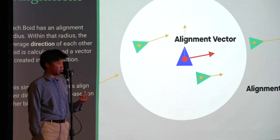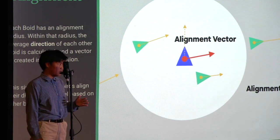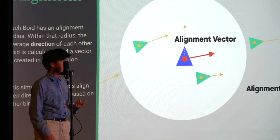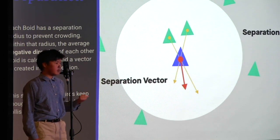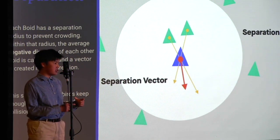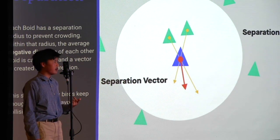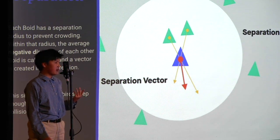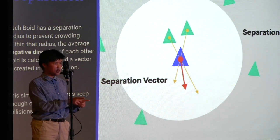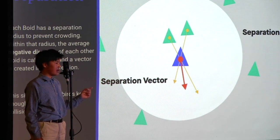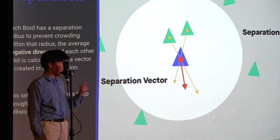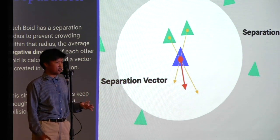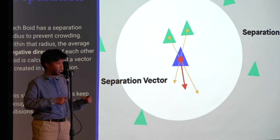Cohesion and alignment are basically the backbone of the simulation, but we need one more rule to prevent these birds from colliding with each other. The last rule is separation. Separation is just to make sure the boids don't merge with each other while they're moving. It's a smaller radius compared to alignment and cohesion. Within that radius, the boids basically just get pushed apart. The average negative direction of every boid is calculated and a vector is created in that direction.